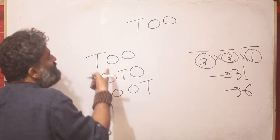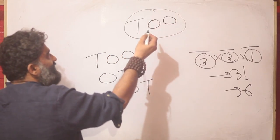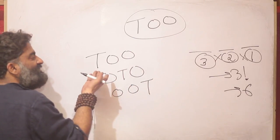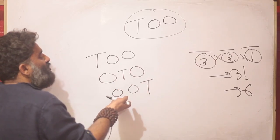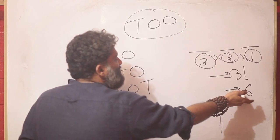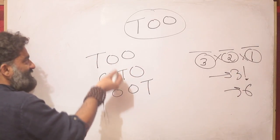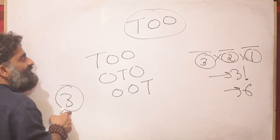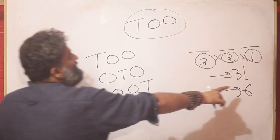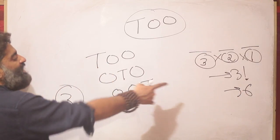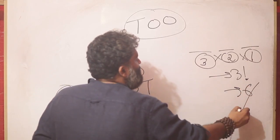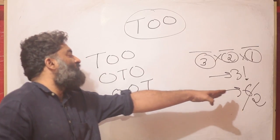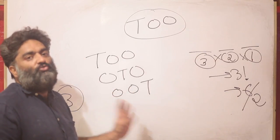Your answer is coming as 6, but the actual answer, logically and empirically, is 3 ways of arranging this. So how do I jump from 6 to 3? What should I do to 6 to get to 3? The answer is fairly easy — divide by 2. Mathematically, if you want to go from 6 to 3, you are dividing by 2.